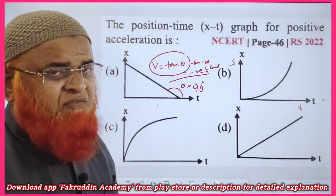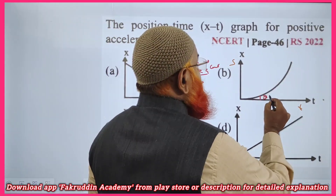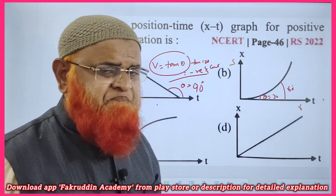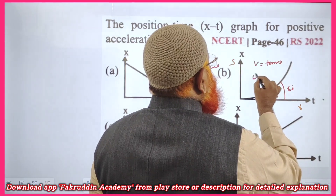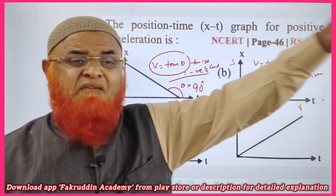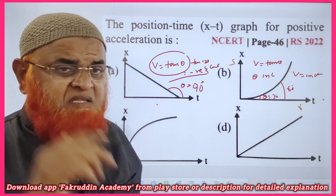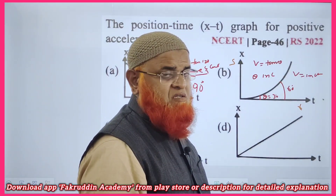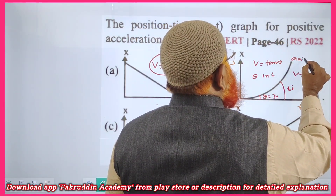Now the story of the second graph: here theta is increasing — imagine theta going from 30 degrees to 60 degrees as the graph is a parabola. Since V equals tan theta, when theta increases, V also increases. This graph says that velocity is increasing constantly — uniformly — which means acceleration is present.